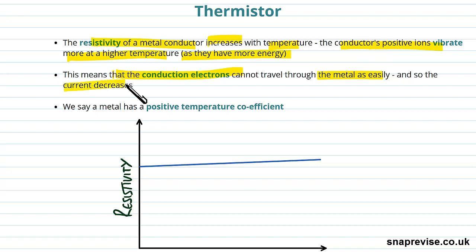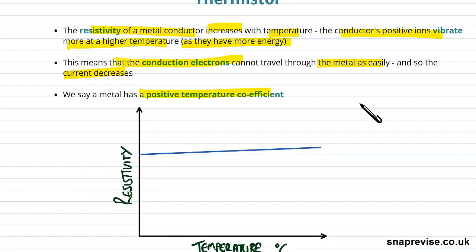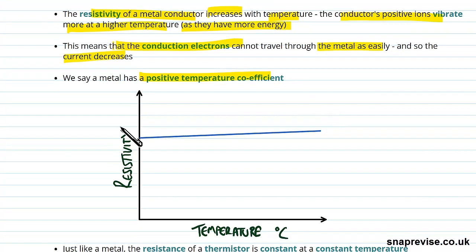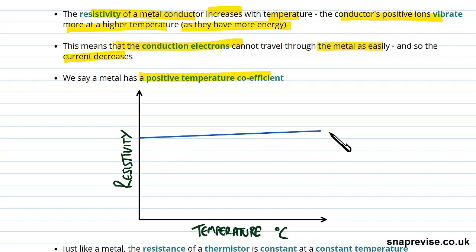Because of that, the current decreases. We say that a metal has a positive temperature coefficient — all that means is that as you increase the temperature, its resistivity increases. We can see that here: we have resistivity on this axis, temperature on this axis, and we can see that the line is slowly increasing as temperature increases.